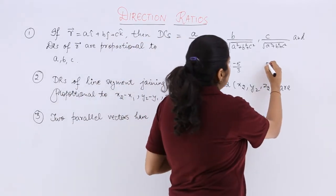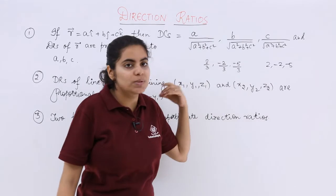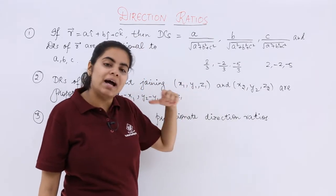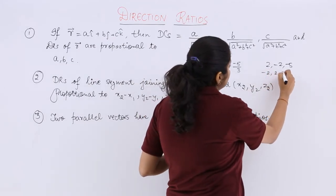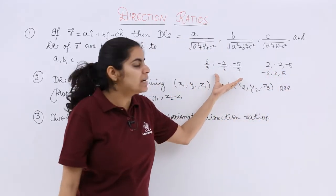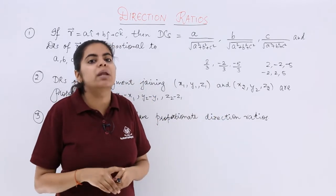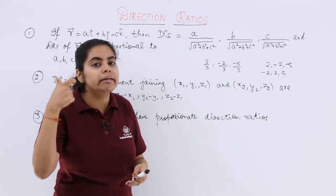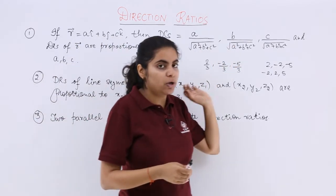So direction ratios can be 2, minus 2, minus 5, if I multiply the direction cosines simply by 3. If I multiply by another common factor say minus 3, my answer will change. If I multiply by 6, my answer will change and so on. So direction ratio can be listened and understood in the form of proportionality. So this is the first point.